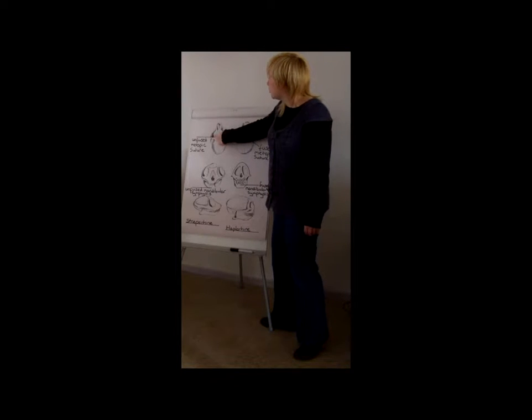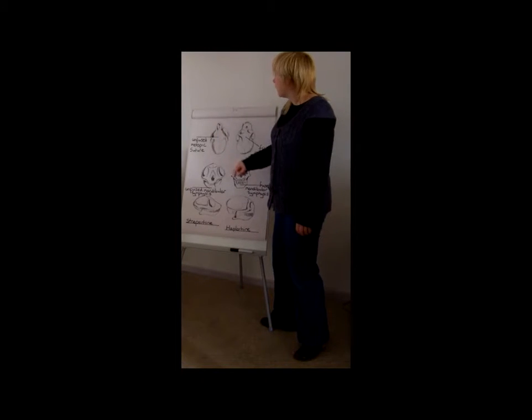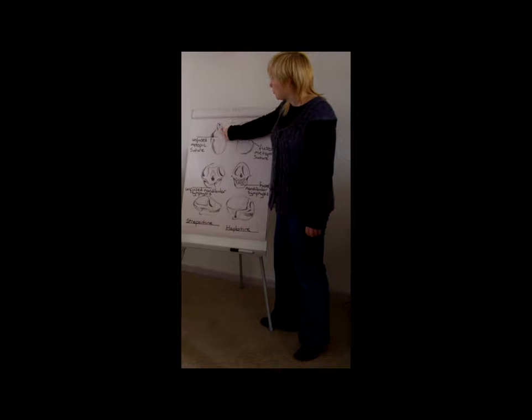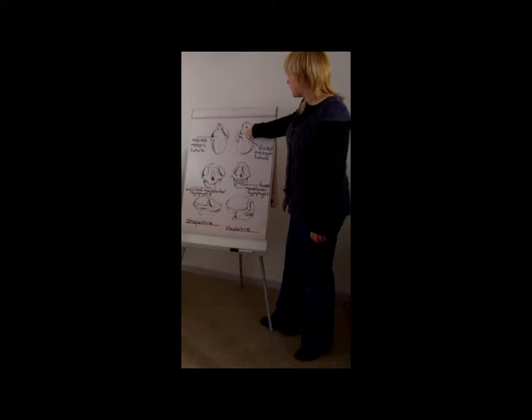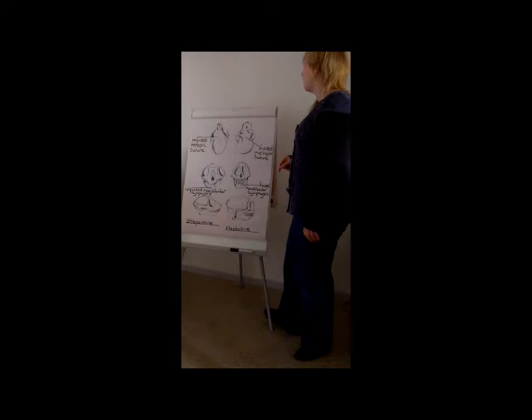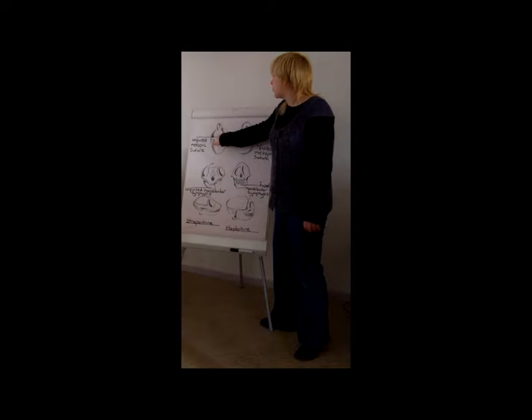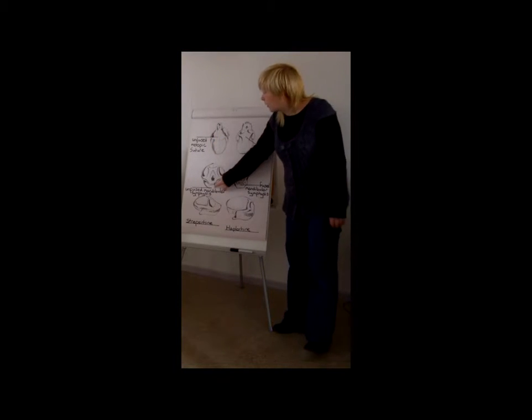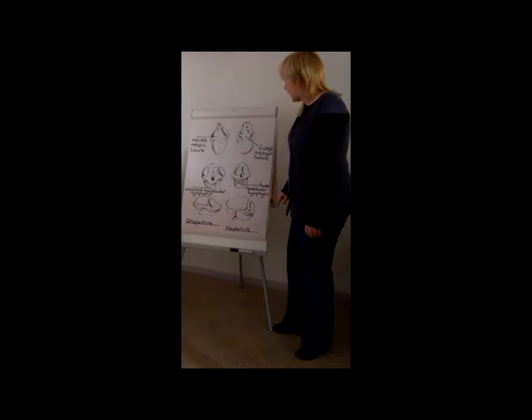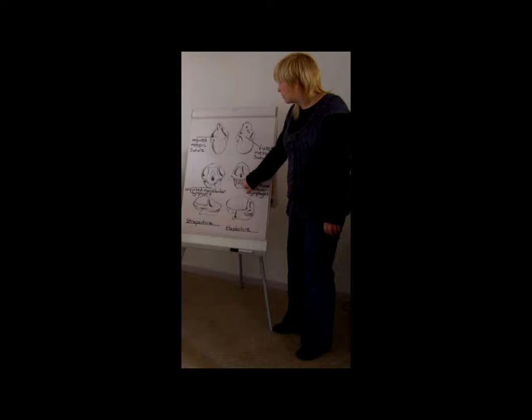If we look now at the frontal bone, which is this area here, we can see this line of fusion on the strepsirhini that goes from the nasal cavity all the way back. You can see that's missing from the haplorhines. This is basically just a line of fusion that exists. It's also in the jaw of the strepsirhini, but again in the haplorhines it's fused and there's no line of fusion there.